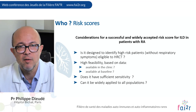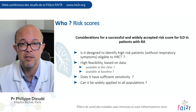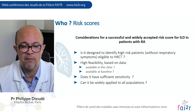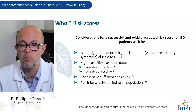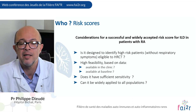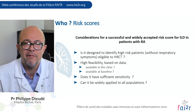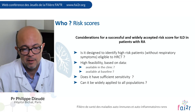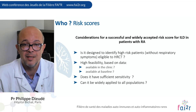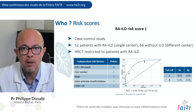Having identified some independent risk factors for ILD, the idea is to develop a risk score in the future to identify patients at high risk of ILD. Here are the considerations for a successful and widely accepted risk score for ILD in patients with RA. First, is it designed to identify high-risk patients eligible to HRCT? Second, high feasibility — based on data easily available in the clinic, available at baseline. Third, does it have sufficient sensitivity? And can it be widely applied to all populations? Let's see results from studies providing risk scores for RA-ILD.